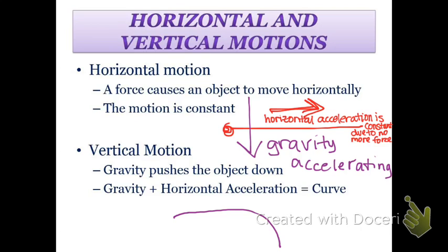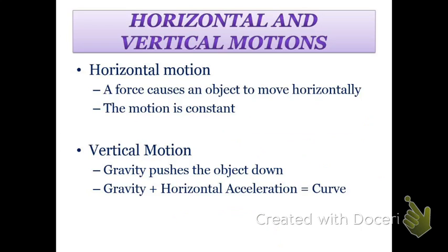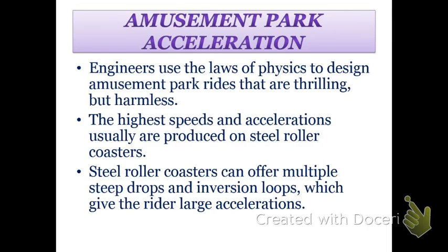We use these ideas of acceleration and different ideas of physics, of projectiles and things to make amusement park rides. So we use these ideas to make harmless, thrilling rides. The most common types of coasters are the steel coasters to give us the most acceleration. There's different drops, there's different loops in order to give us different accelerations in order for us to have better rides. And that all goes together with projectiles and accelerations.